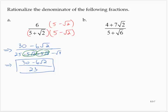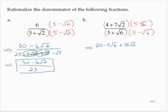The second problem is 4 plus 7 times the square root of 2 over 5 plus the square root of 6. Using a similar idea, I will multiply the denominator by 5 minus the square root of 6, and the numerator by that same quantity. That gives me 20 minus 4 times the square root of 6 plus 35 times the square root of 2 minus 7 times the square root of 12, over 25 minus 5 root 6 plus 5 root 6 minus the square root of 36.